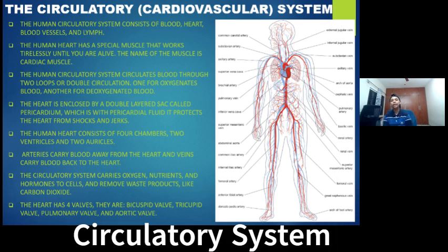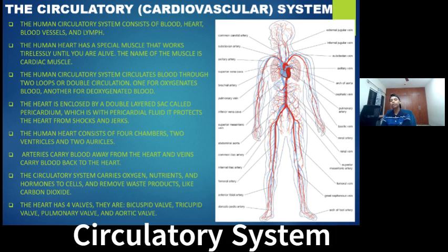When you inhale, the oxygen goes to your lungs and is stored there. Blood that is not filled with oxygen — and is filled with carbon dioxide and waste materials — is known as deoxygenated blood. The deoxygenated blood comes back to the heart and then goes to the lungs, where it gets filled with oxygen and becomes oxygenated blood. The oxygenated blood then returns to the heart and is pumped to all parts of the body.